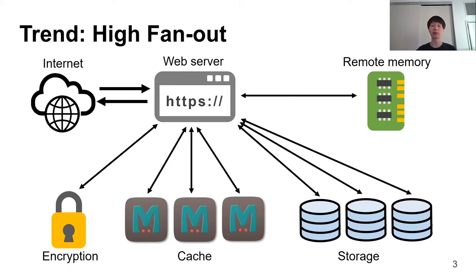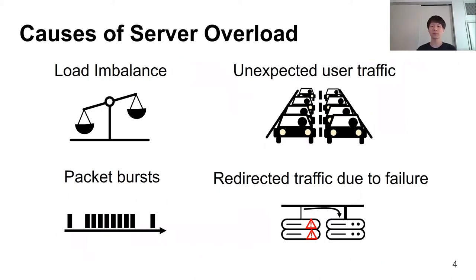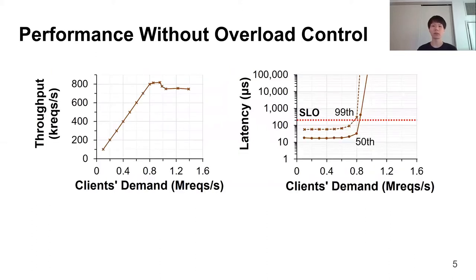With microsecond-scale RPCs, data center applications are often implemented with multiple RPCs for better maintenance and reliability. For example, a web service may have RPCs for accessing disaggregated memory, encryption, caching, and storage. With such a fan-out traffic pattern, low tail latencies are especially important to provide low response time to the user. However, achieving low tail latency is challenging because of server overload. RPC servers get overloaded for various reasons, including load imbalance, unexpected user traffic, packet bursts, or redirected traffic due to failure.